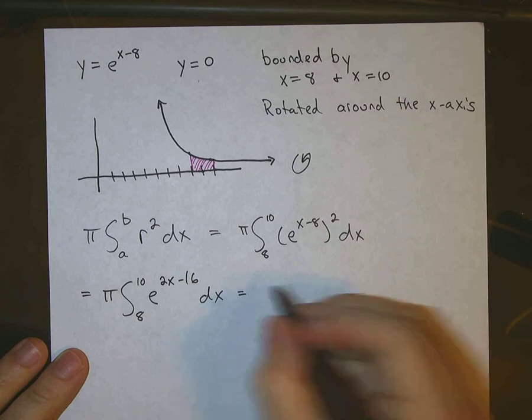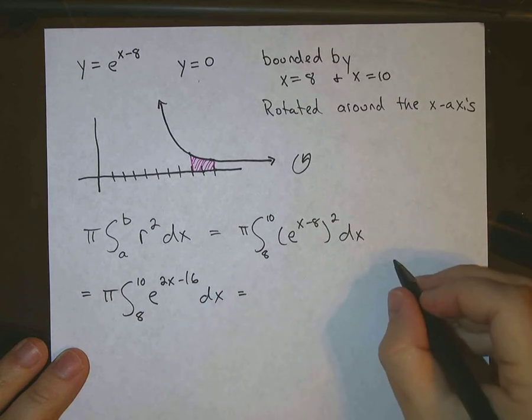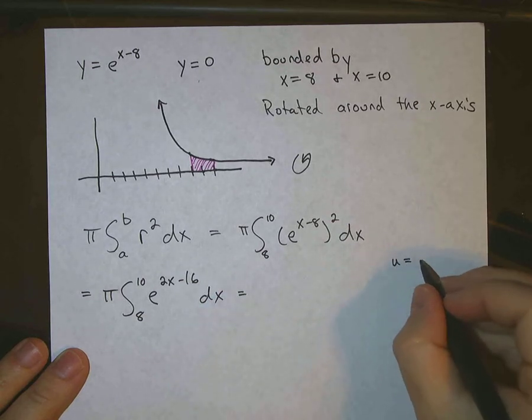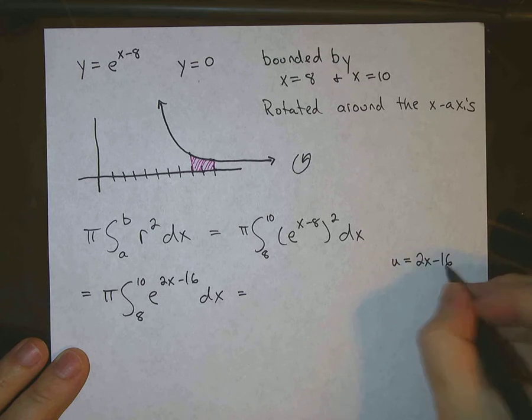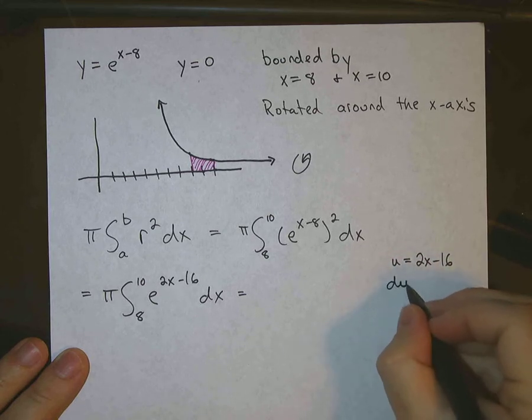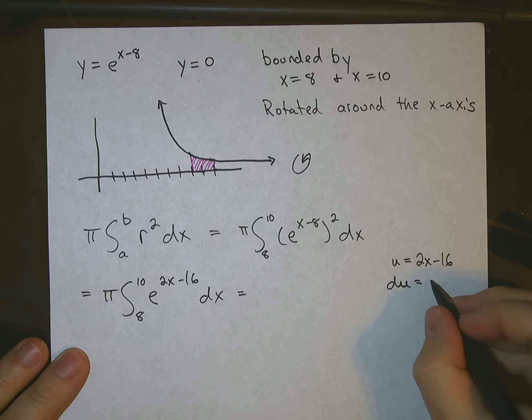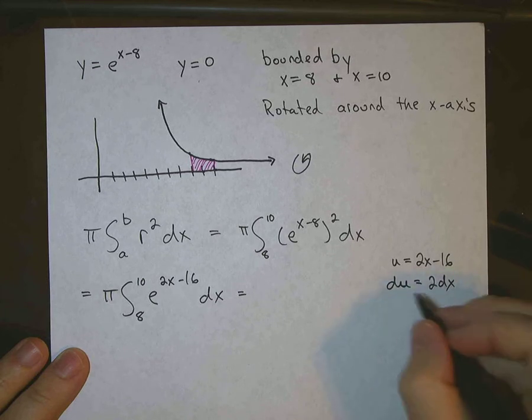Okay, we're going to have to do a little u substitution. So I'll go over here and I'll say that u is equal to the exponent 2x minus 16. That means du is going to be equal to 2 dx. We divide both sides by 2. We get dx is equal to du over 2.